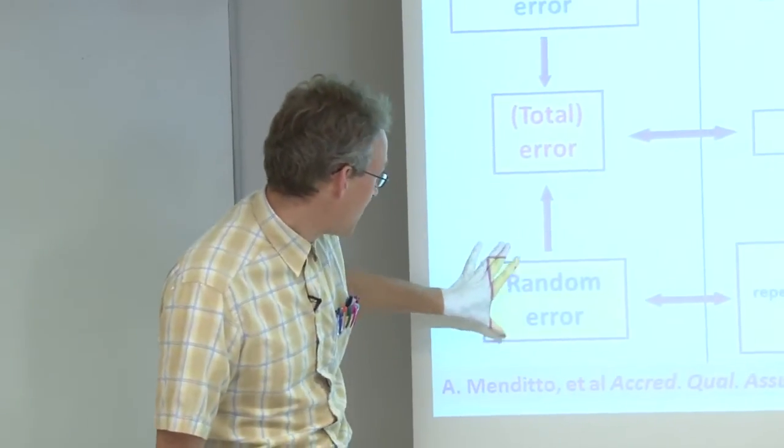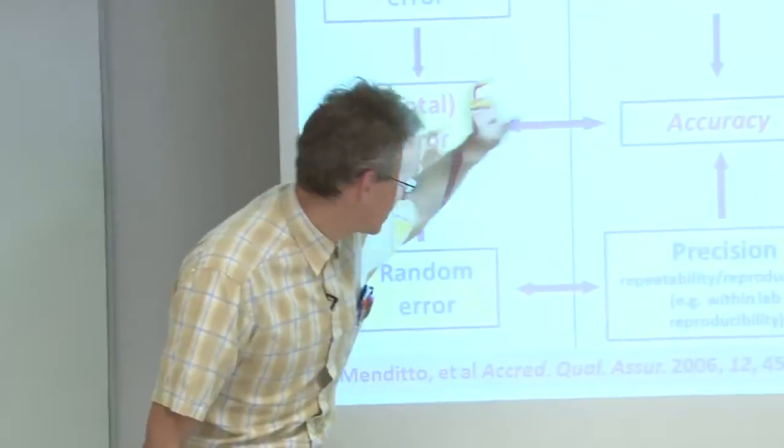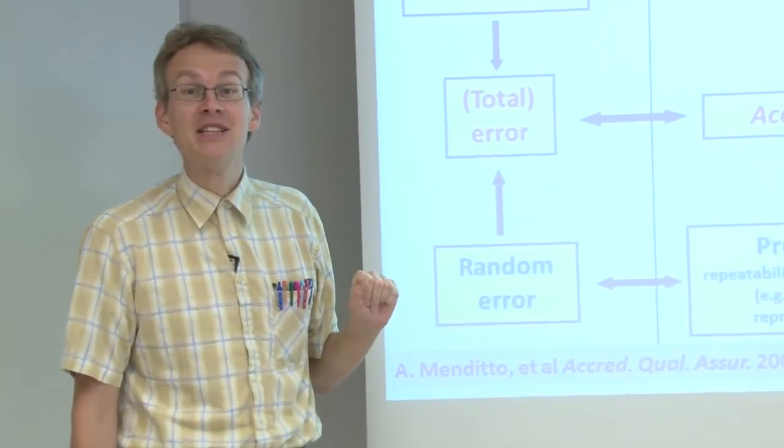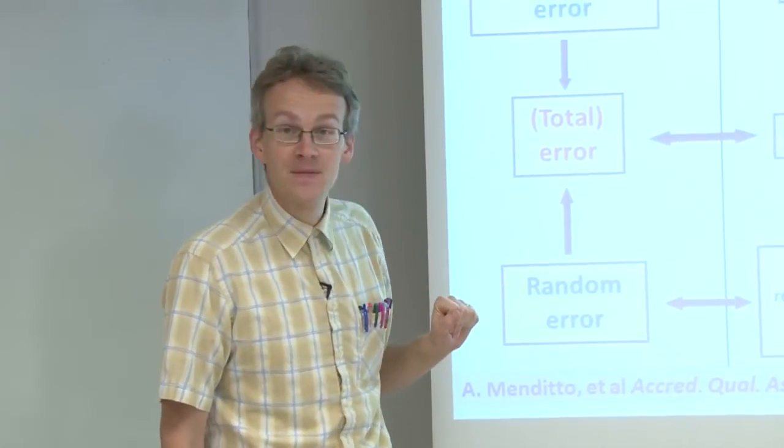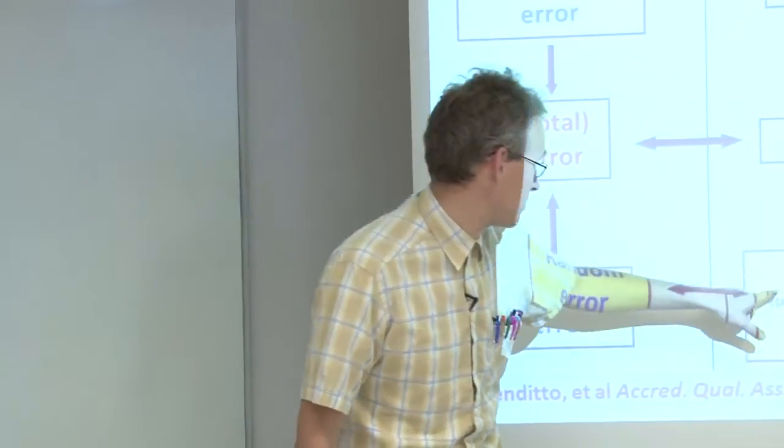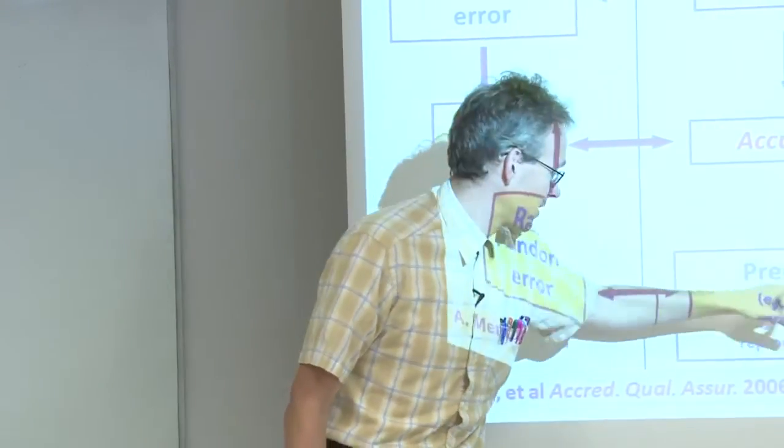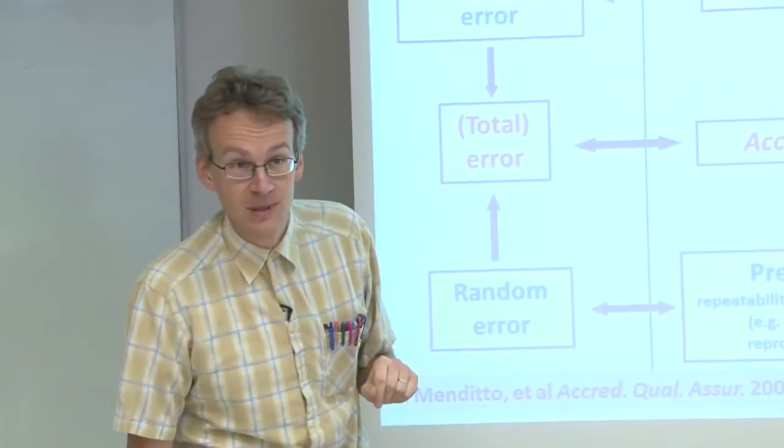Secondly, the random error can be approximated or can be estimated by precision. And there are different precision characteristics, repeatability, reproducibility, and there are different kinds of reproducibility.